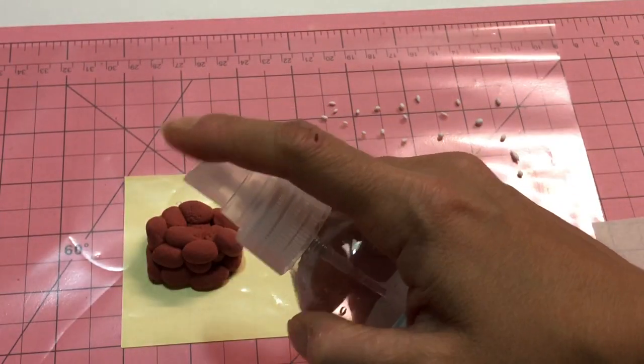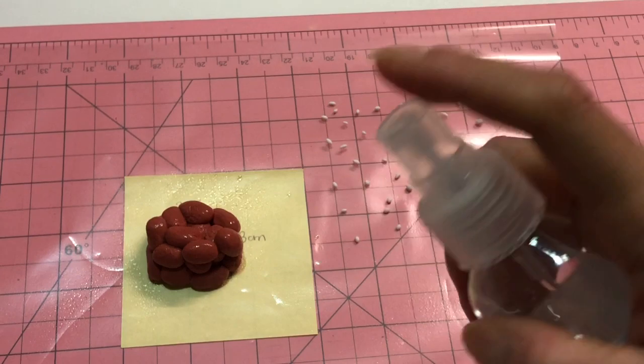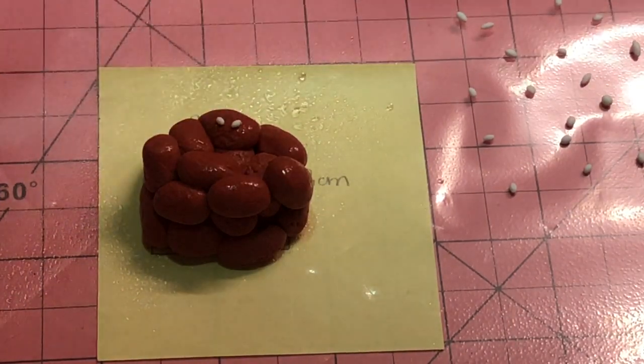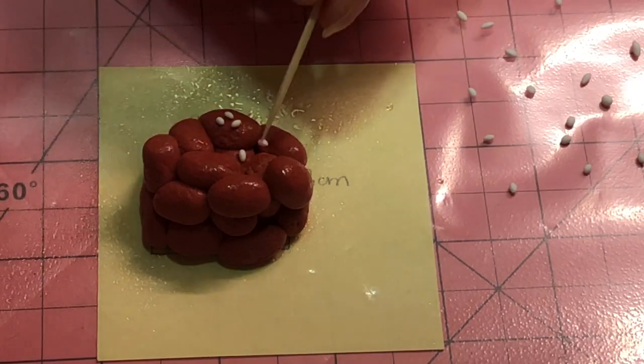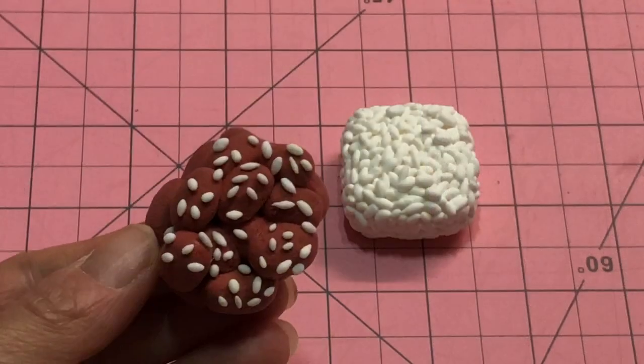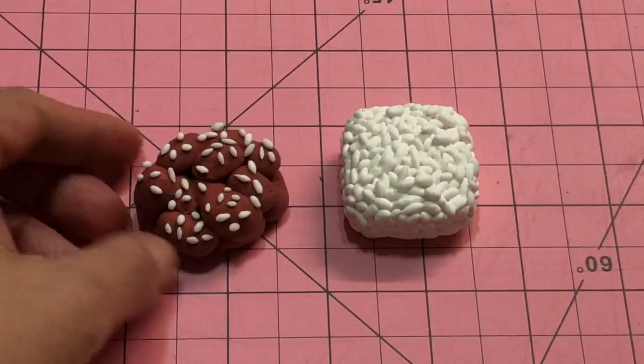Following this, roll teeny tiny oblongs for the sesame seeds. To help everything stick, give the clay a light misting of water before placing the sesame seeds on top. Let your piece dry overnight. Because it is air dry clay, the pieces may shrink up to 10% depending on the brand.